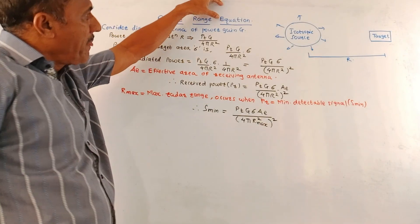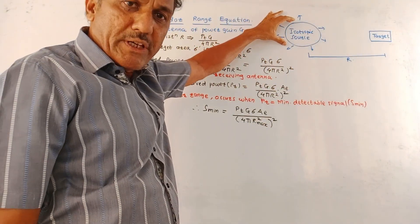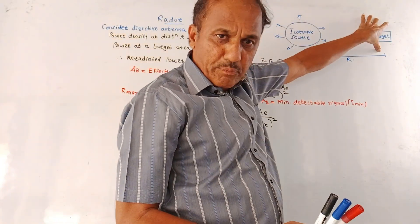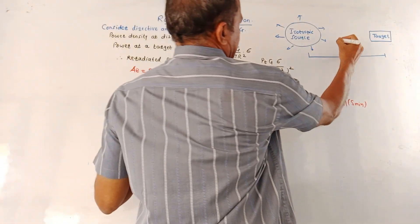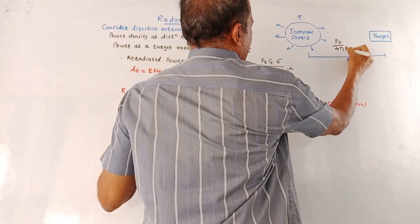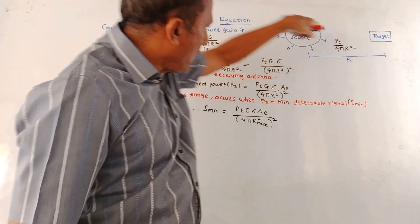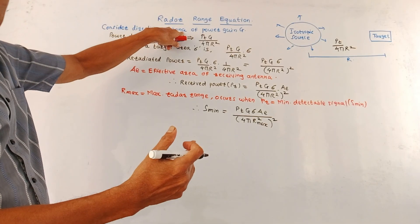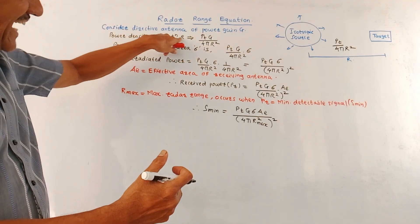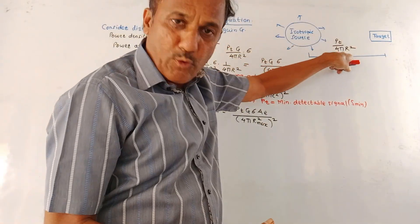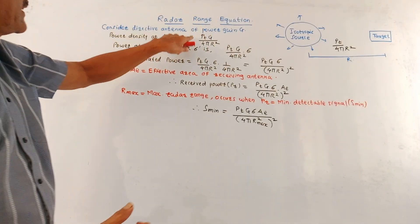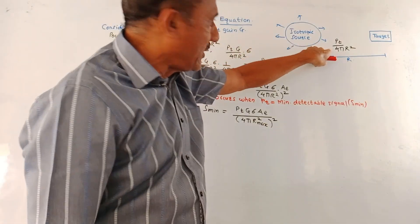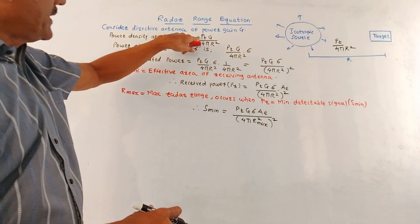Now we will derive the radar range equation. Consider a generalized situation with an isotropic antenna, which radiates equally in all possible directions. Suppose the target is placed at some distance R. Then the power density is given by Pt / (4πR²), where Pt is the transmitted power and R is the distance to the target. In case of a radar with a directive antenna having power gain G, the power density at distance R (at the target) becomes Pt × G / (4πR²).